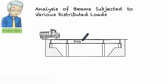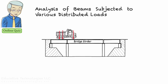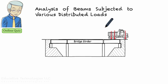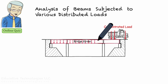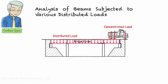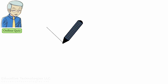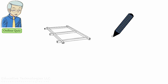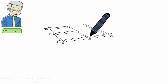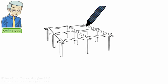For example, in a bridge structure, a moving vehicle exerts a series of concentrated loads on the bridge girder. The weight of the girder itself, however, is treated as a distributed load. Further, a distributed load can act along a line or on a surface — that is, we have one-dimensional distributed loads and two-dimensional distributed loads.